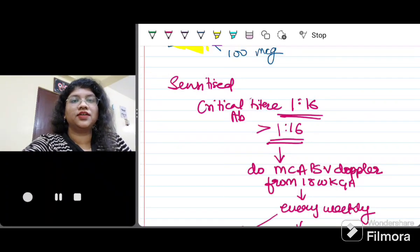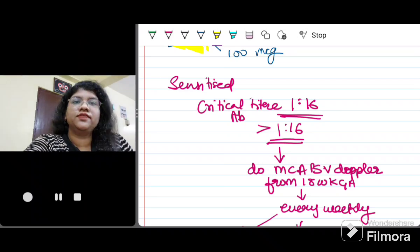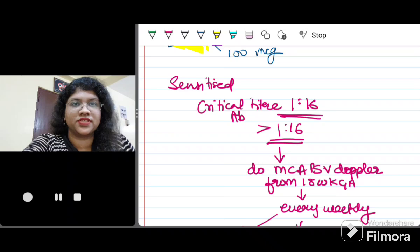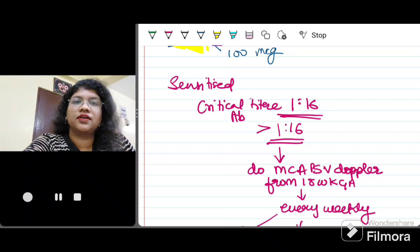After you have given her anti-D at 28 weeks you are going to safely deliver her around 39 to 40 weeks. Postpartum you are going to do the baby's blood group and RH typing along with the DCT test, that is direct Coombs test. If the baby's blood group is positive and DCT is negative then you are going to administer her the postpartum prophylactic dose of anti-D which is the same dosage.